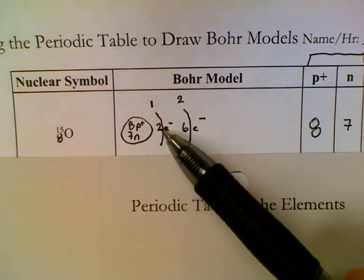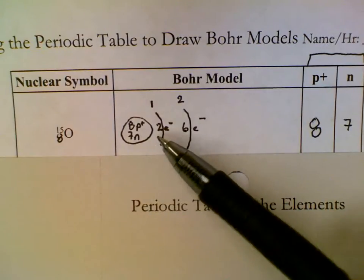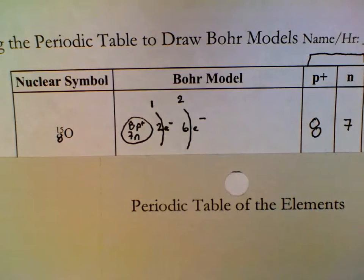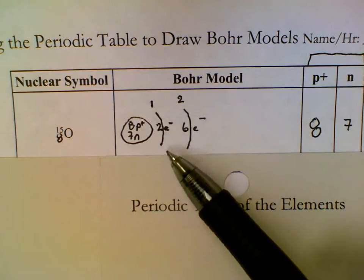First two electrons were hydrogen and helium squares on the periodic table. Next six were lithium, beryllium. I crossed over the gap to boron, carbon, nitrogen, oxygen. This is what the Bohr model should look like for oxygen.